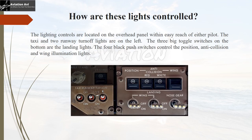Now that we have understood the lights on an aircraft, we need to understand how these lights are controlled. The lighting controls are located on the overhead panel, within easy reach of either pilot. The arrangement varies from aircraft to aircraft, but in a typical example: the taxi and runway turnoff light controls are on the left; three large toggle switches control the landing lights mounted on the wings or nose gear; and four black push switches control the position, anti-collision, and wing lights.